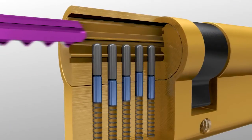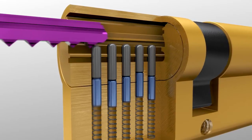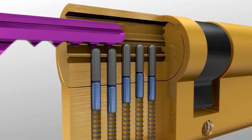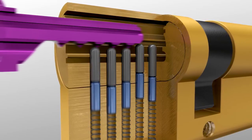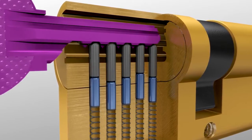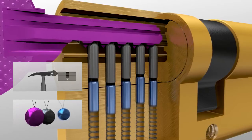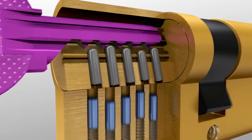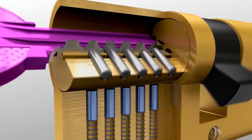The special key used in bumping employs the very same principle. When hit or tapped, it transfers the energy onto the cylinder pins. As a consequence, the sprung pins are released into an unlocked position and rotation of the cylinder becomes possible.